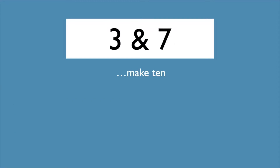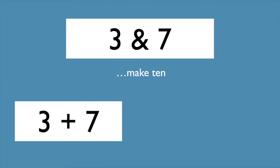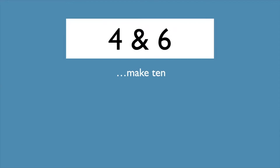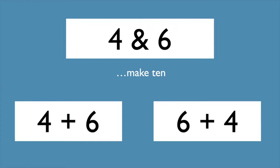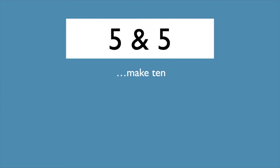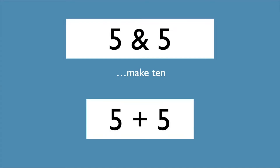Three and seven make ten. Add them both ways: three plus seven, seven plus three. Four and six make ten. Add them both ways: four plus six, six plus four. Five and five make ten. Add it one way: five plus five equals ten.